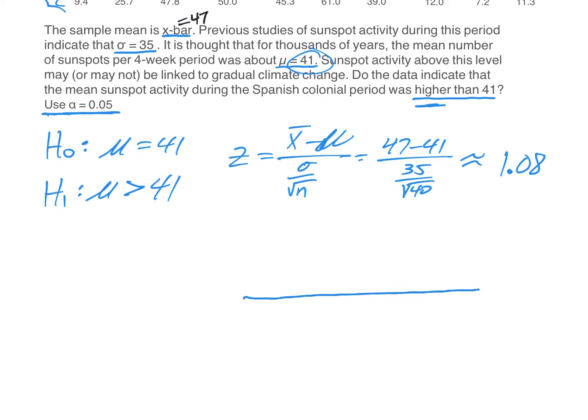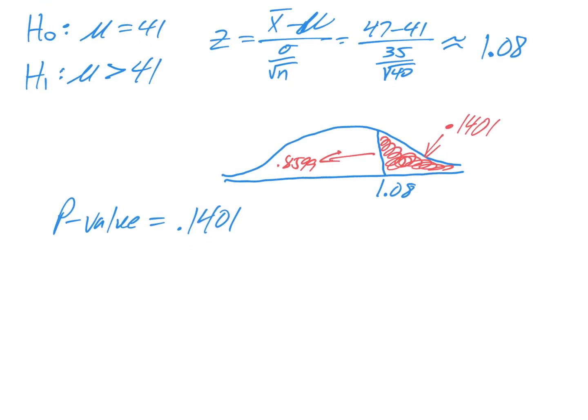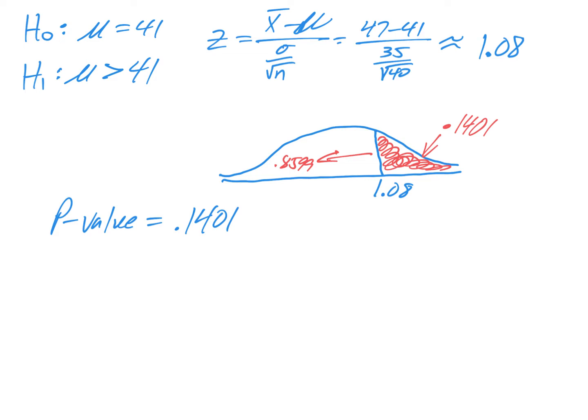Now, with that 1.08, we are going to graph it on a standard normal curve. I think it appears about right here. I'm going to call it 1.08. We are looking for the area to the right, to the greater than. But the problem is the chart only gives us area to the left. So if I look up 1.08, it yields 0.8599. Subtract that from 1, and you get the percentage you're looking for, 0.1401. This means that our p-value is 0.1401, since this is a one-tail test. We know that 0.1401, which is 14.01%, is greater than the significance level of 0.05.